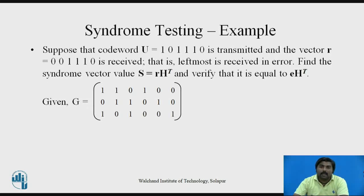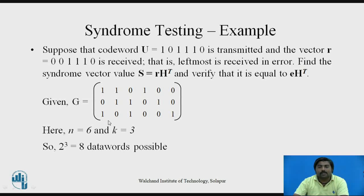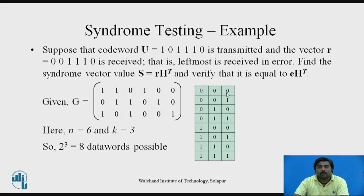Let's verify this with an example. Suppose codeword U = [1, 0, 1, 1, 1, 0] is transmitted and vector R = [0, 0, 1, 1, 1, 0] is received, meaning there is an error in the leftmost bit — a 1 was transmitted but a 0 was received. We need to find the syndrome vector using S = R·HT, and also verify using S = E·HT. The generator matrix G is given, with N = 6 and K = 3, giving 2³ = 8 possible data words from [0,0,0] to [1,1,1].